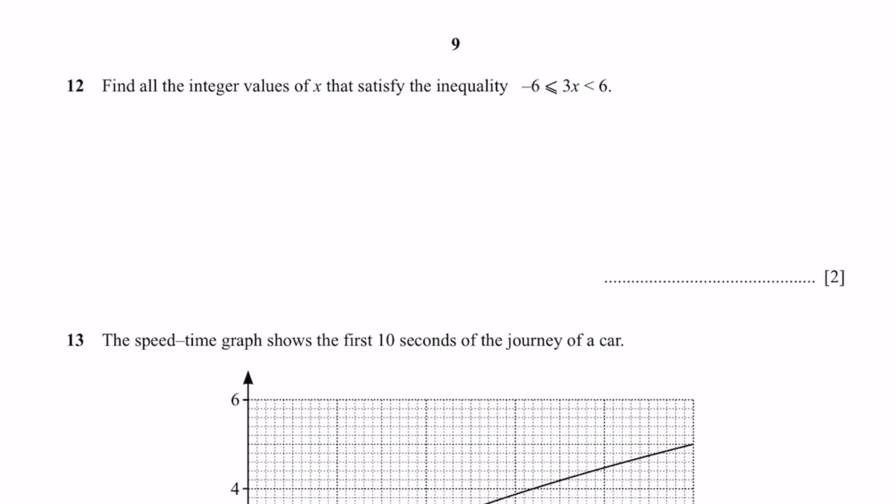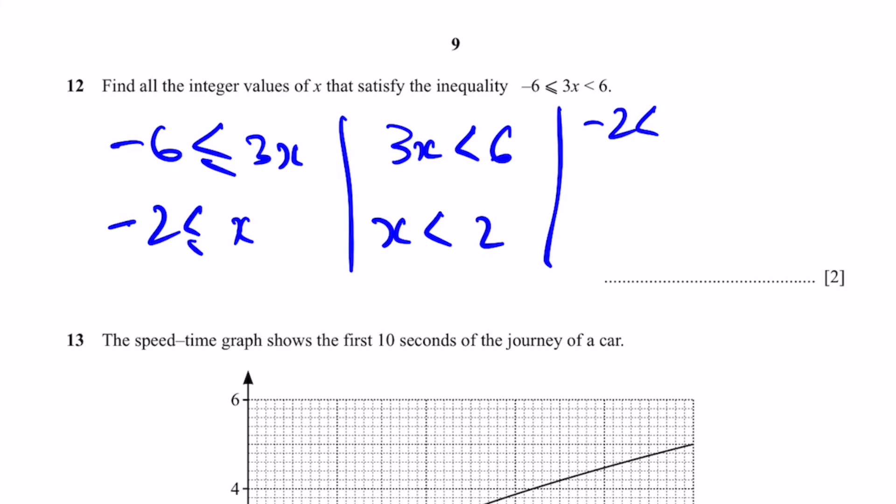Going to question 12: Find all the integer values of x to satisfy the inequality minus 6 less than or equal to 3x less than 6. That's simply going to be when we separate this into two different inequalities and then we solve both. Minus 2 is less than or equal to x and x is less than 2. We bring them back together to get minus 2 less than or equal to x less than 2. We can allow minus 2 since it's less than or equal to x, so it can be equal. Then we have minus 1 and then we have 0 and then we have 1. 2 is not allowed since there's no equal to 2. So these four integers can be allowed.